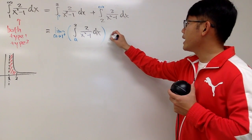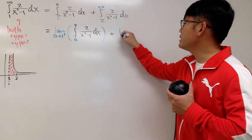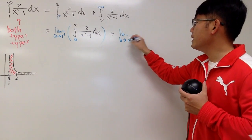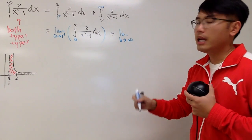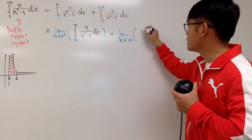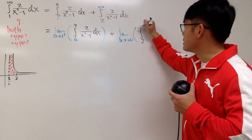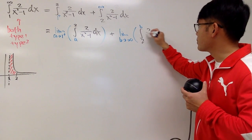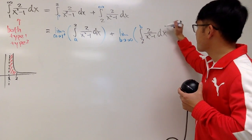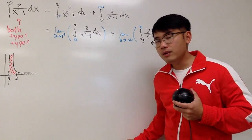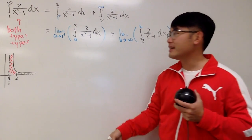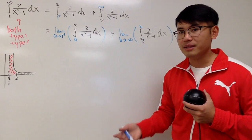For the second part, the trouble place is at the top — infinity — so we write: limit as b goes to infinity of the integral from 2 to b of 2 over x squared minus 1 dx. Now we just have to integrate, plug in, and then take the limit.